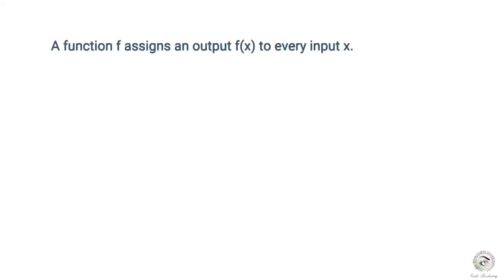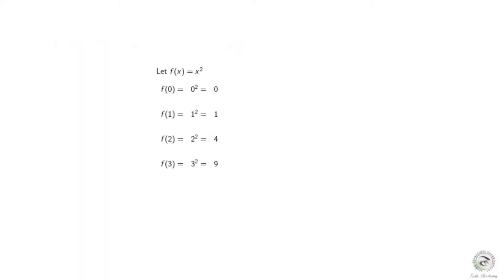A function assigns an output to every input x. For example, consider the function f of x equals x squared. If you input 0, the output is 0. If you input 1, the output is 1. If you input 2, the output is 4. If you input 3, the output is 9. Observe that the output of a function changes as the input changes.